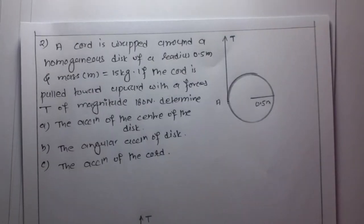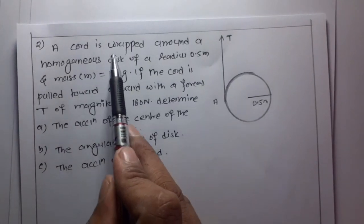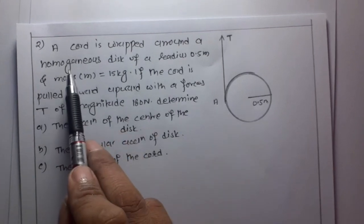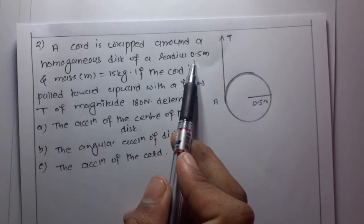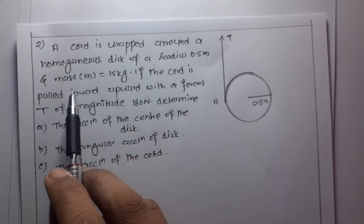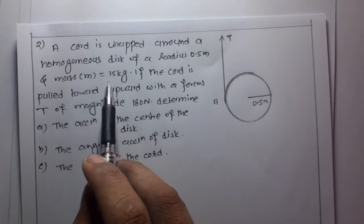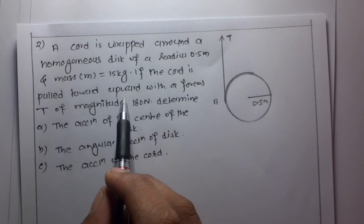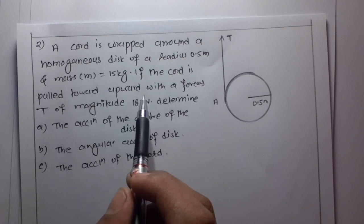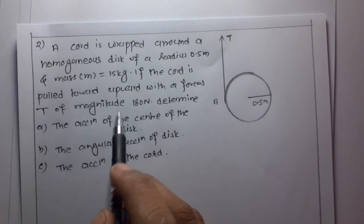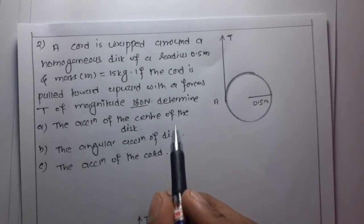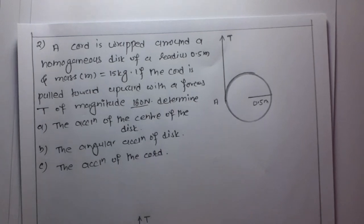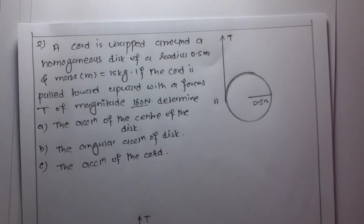Second question. A chord is wrapped around a homogeneous disk of radius 0.5 meter and mass m equal to 15 kg. If the chord is pulled upward with a force T of magnitude 180 newton, determine the acceleration of the center of the disk, the angular acceleration of the disk, and the acceleration of the chord.